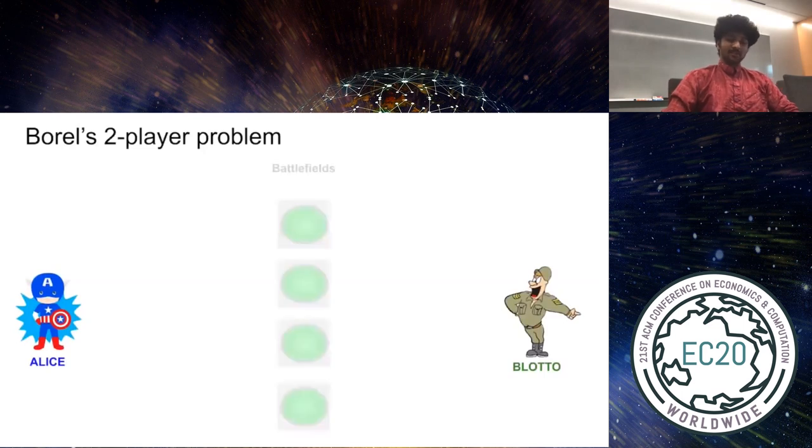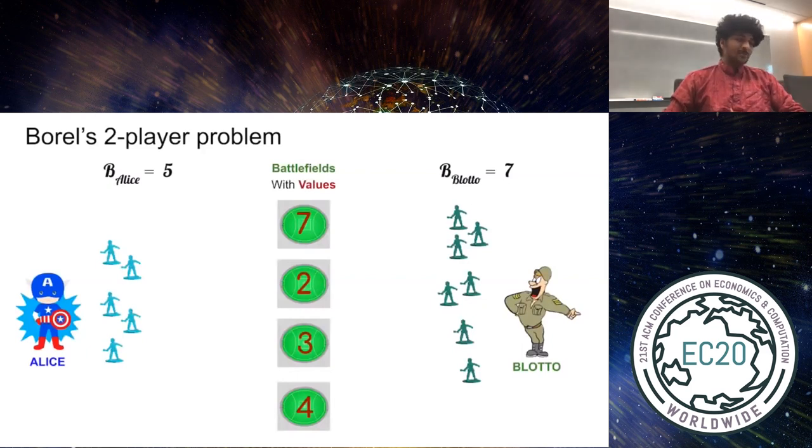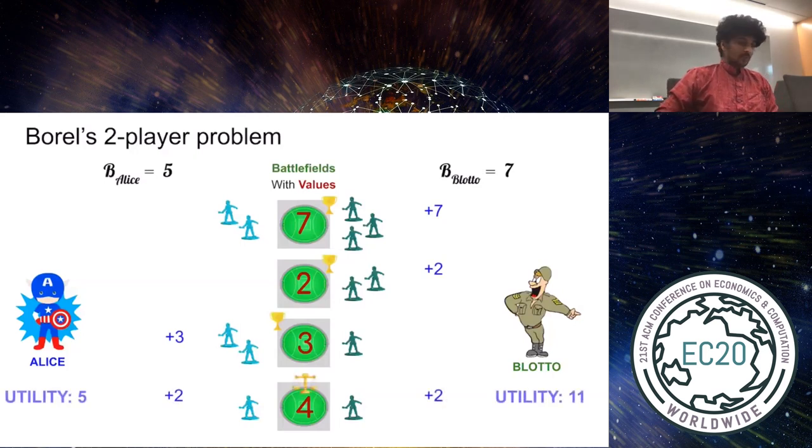What is the game? Two army commanders, Alice and Blotto, are fighting across several battlefields. Each commander has a budget of troops available at his disposal, and each battlefield has a value. The game is played as follows: the commanders simultaneously allocate their troops across the battlefields, and the value of each battlefield is won by the commander that sends more troops to that battlefield. For instance, Blotto wins the first two battlefields in this case, while Alice wins the third one. If both players send the same number of troops to a given battlefield, its value is split evenly by the commanders. The goal of each commander is to maximize his utility, the total value he wins.